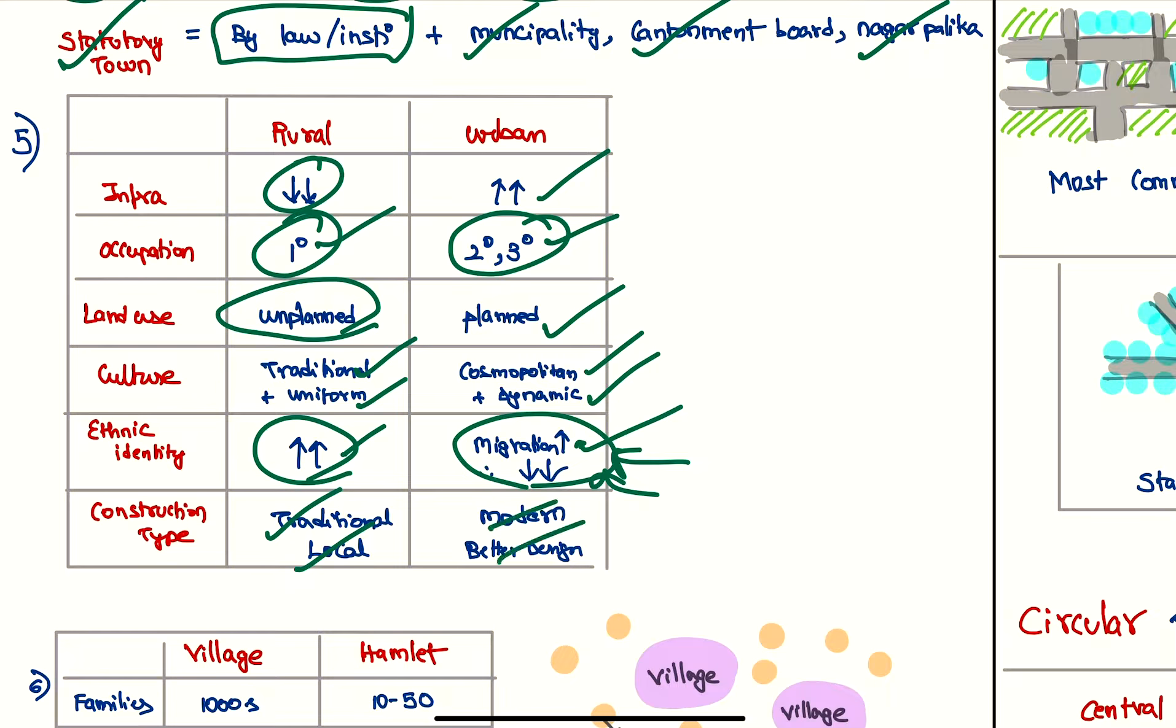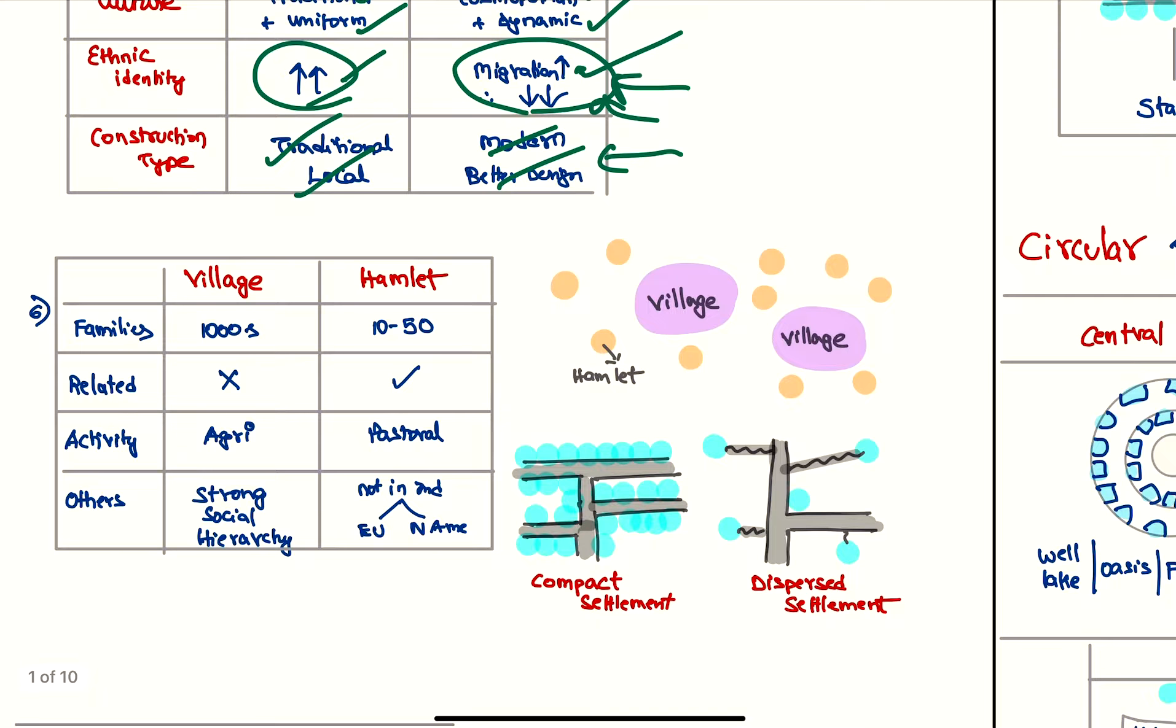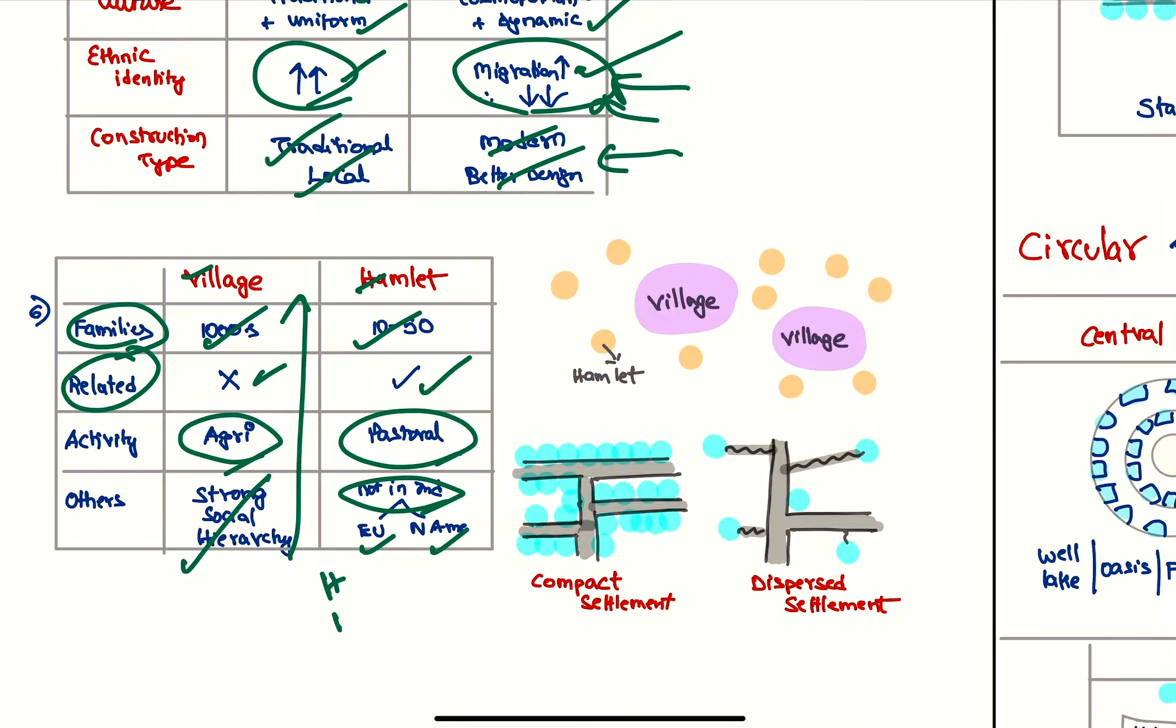Traditional construction type with local materials is built here; better and modern designs with better materials is used here. Now based on compactness we have village and hamlet. Here, number of families living are thousands; here only 10 to 50. All the families are not related in a village, and they are all related in a hamlet. The most important activity is agriculture here; it is pastoral activities. Strong social hierarchy is seen in the village, whereas hamlets are not seen in India—rather they are seen in Europe and North America, but in India in some hills and deserts hamlets can be seen.